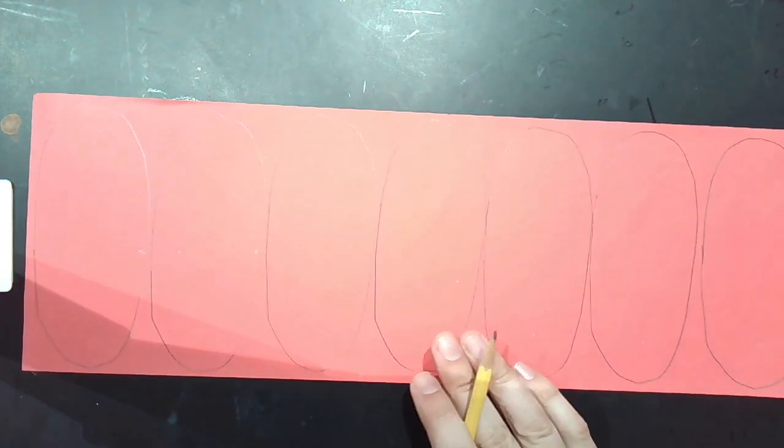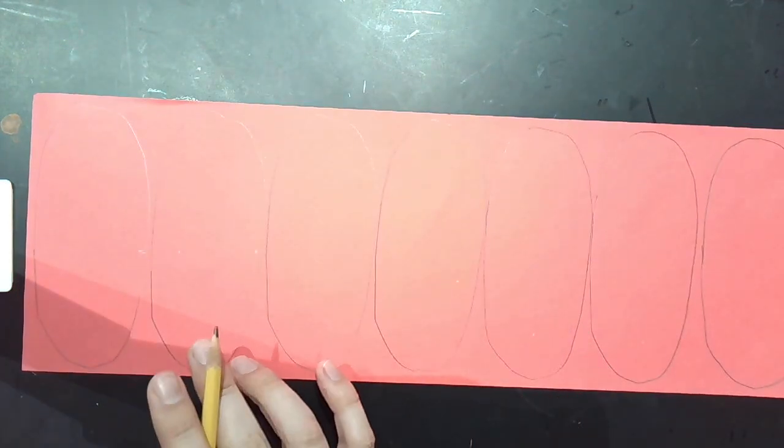So now I have seven ovals on my page and the next step is just to trace these with a nice thick black line. So you can use a black marker, you can use a black crayon, but let's trace these with a nice thick line. I'll fast forward through that and I'll meet you back in a second.